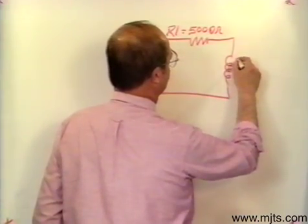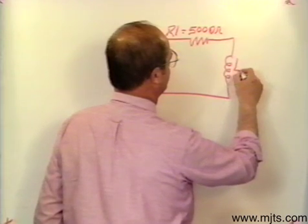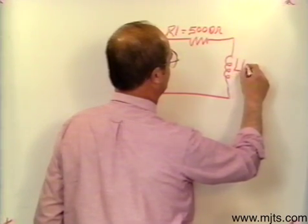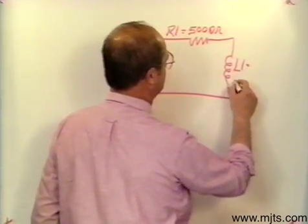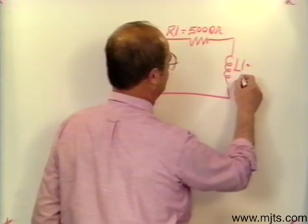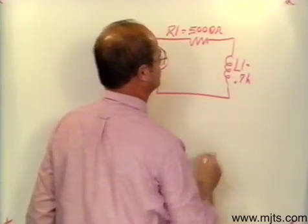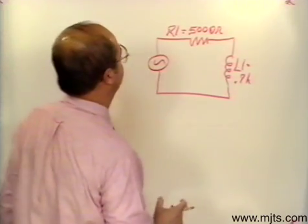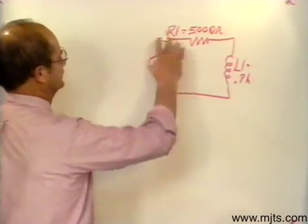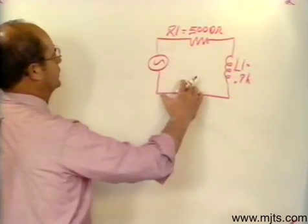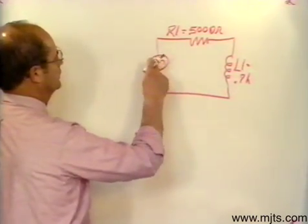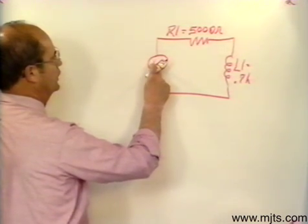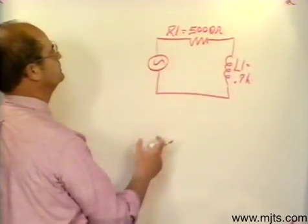Our inductor, in this case L1, is equal to 0.7 Henrys. This is a series circuit with alternating current applied to it.